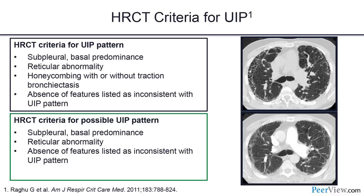The next pattern is the evolving 'possible UIP' — correct distribution with reticular lines and traction bronchiectasis, but no honeycombing. About two out of three of these cases will have UIP under the microscope, but one in three may have NSIP or other features. We still recommend considering the risks and benefits of biopsy in this group, though we're beginning to understand demographic features that increase probability of UIP and may spare some patients a biopsy.